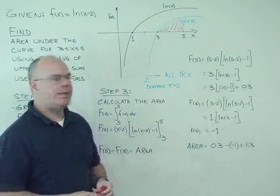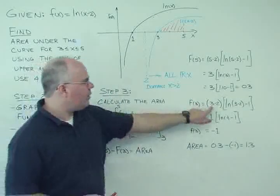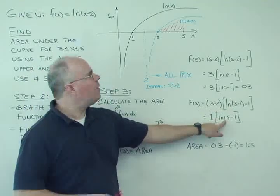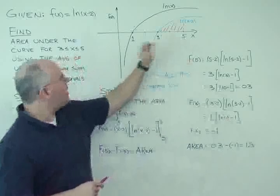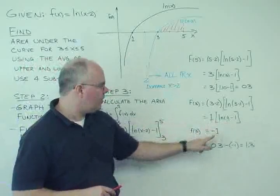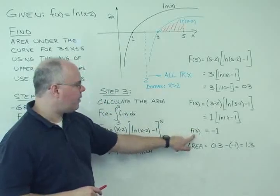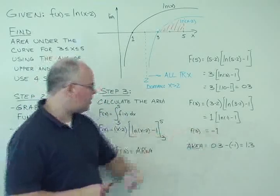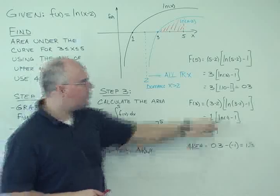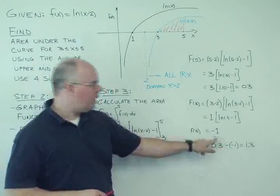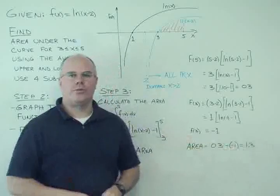The next value we need to calculate is F(3). 3 minus 2 is 1. ln(3-2) is ln(1). We know that ln(1), in this case, is 0. So we have minus 1 times 1, and that's minus 1. So the function evaluated at x equals 3 is equal to minus 1. So our area is just 0.3 minus a minus 1, and we get a value of 1.3.